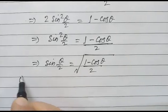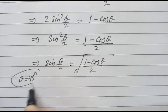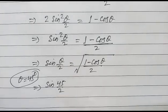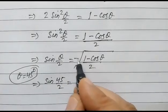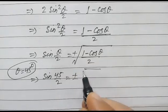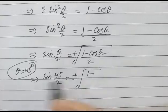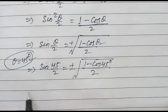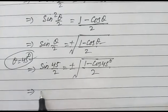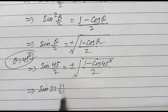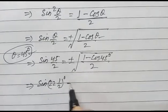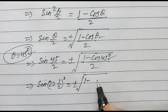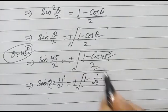So sine theta by 2 will be equal to square root of 1 minus cos theta over 2. If we put theta equal to 45 degrees, so sine 45 over 2, that is sine 22 and a half, will be equal to plus or minus square root of 1 minus cos 45 degrees over 2. And cos 45 is 1 over square root of 2.